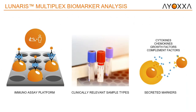Lunaris is a multiplex protein analysis platform. For those that don't know, multiplexing is a tool that allows users to identify and quantitate multiple biomarkers or analytes of interest at one time, rather than performing individual experiments or assays. Essentially, you are running multiple sandwich analyses in one well. Lunaris is applicable for a variety of matrices — clinically relevant sample types such as serum, cell culture supernatant, and plasma — as well as kits for ophthalmology ocular fluids like vitreous or aqueous humor. Our kits can detect secreted markers consisting of cytokines, chemokines, and both growth and complement factors.